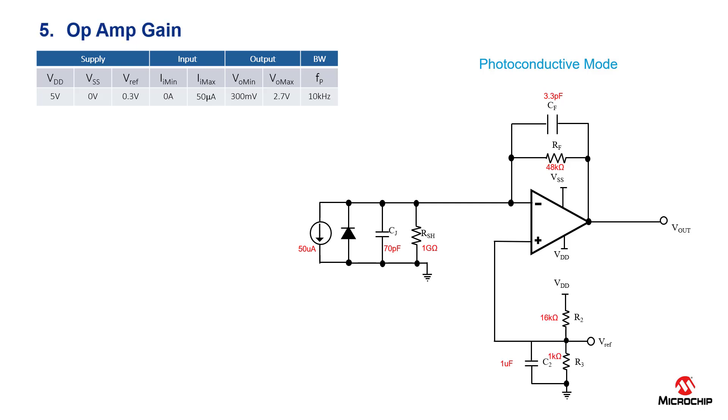For step five, we need to find that the gain bandwidth of the circuit is large enough for stability. To do this, we solve the inequality shown on the screen. As you can see, we already have most of these values with the exception of Ci.